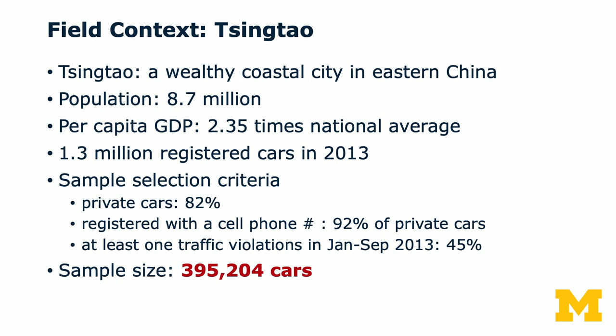We imposed several criteria for sample selection. First, they had to be private cars — that reduced the sample by about 18%, leaving 82% of all registered cars. We also required that cars were registered with a cell phone number, which is 92% of private cars. And that particular cell phone number had to have at least one traffic violation in the first three quarters of 2013, which is 45% of the sample. The total sample size ended up being 395,204 cars — roughly 400,000.